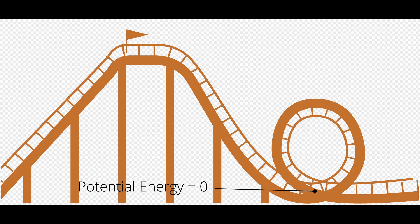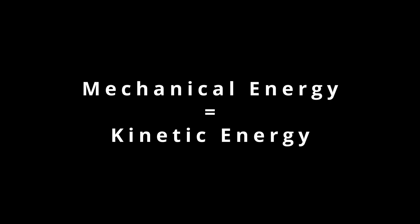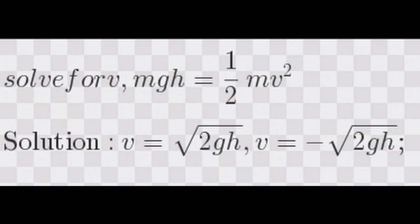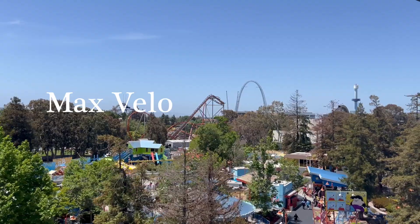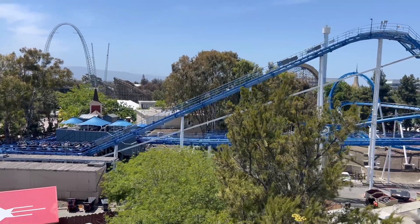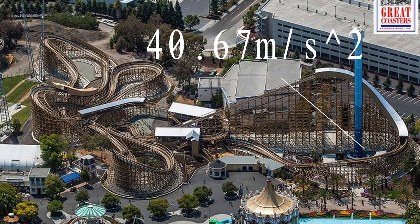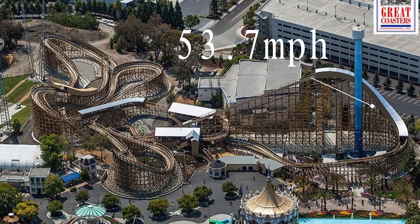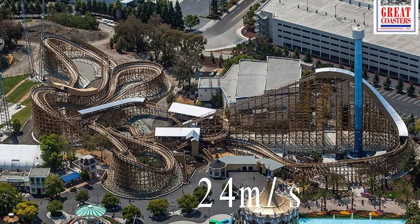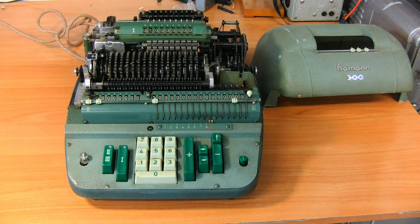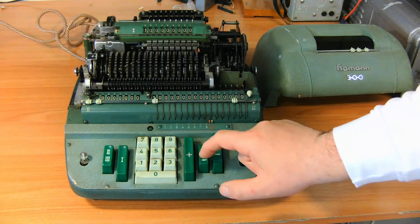At the bottom of the roller coaster, the potential energy would be zero and kinetic energy would be at its maximum, equal to the total mechanical energy. We used one-half mv² = mgh and isolated for v to get √(2gh). We got a max velocity of 24.86 meters per second. Using that speed, we found the centripetal acceleration using v²/r, where r is the radius of the turn — giving 40.67 meters per second squared. We also measured the actual velocity of the drop and found it to be 53.7 miles per hour, which is just 24 meters per second — very close to our calculation, meaning you probably won't crash.